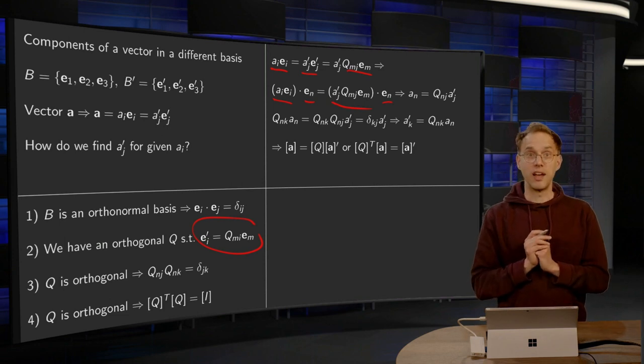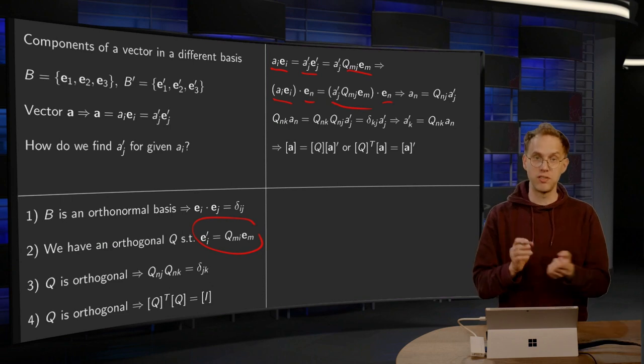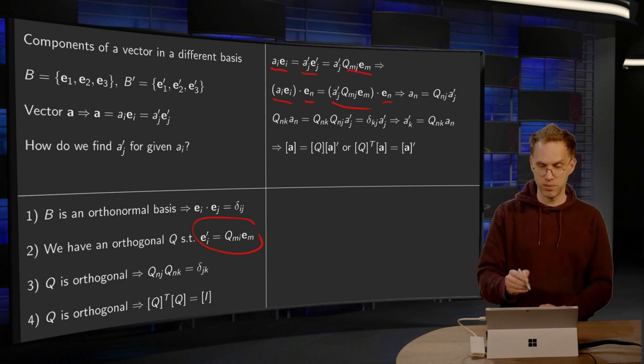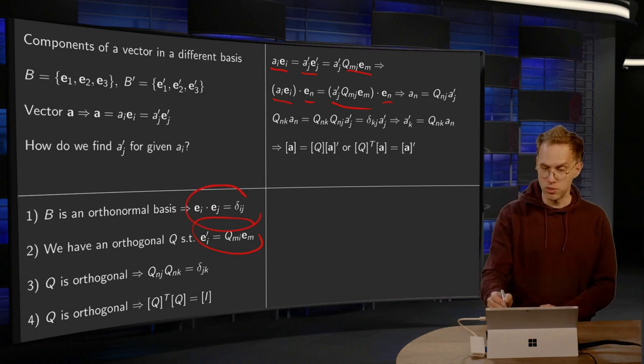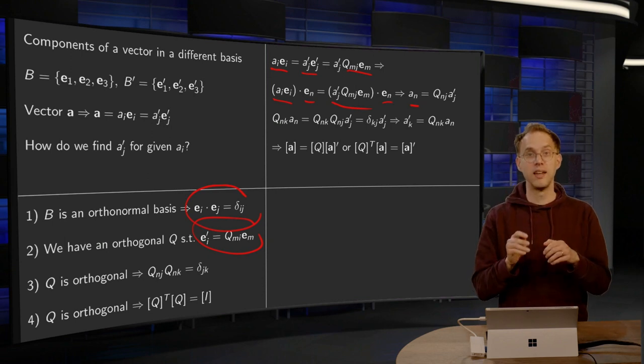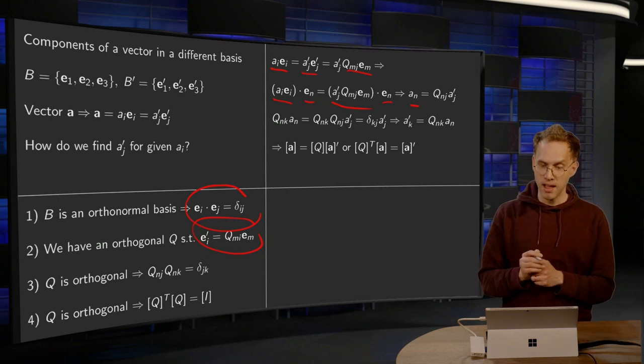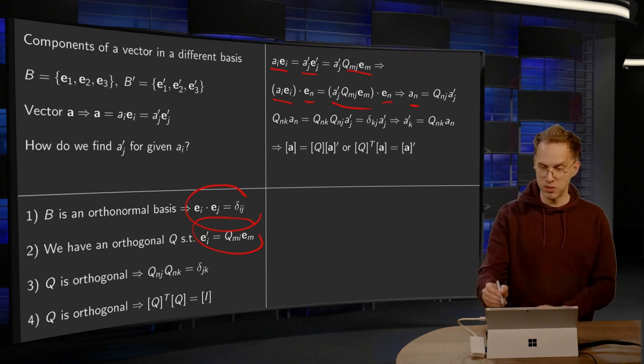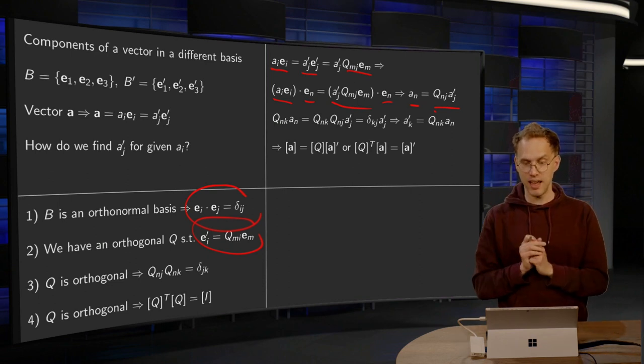Now, what do we get on the left hand side, we have EI inner product with EN, which just gives us delta IN, this property over here, so this reduces to AN. And on the right hand side we have EM inner product with EN, taking the inner product gives us again the first rule, delta MN, and simplifying, use QnJ AJ'. So, now we have expressed the AN in the AJ'.